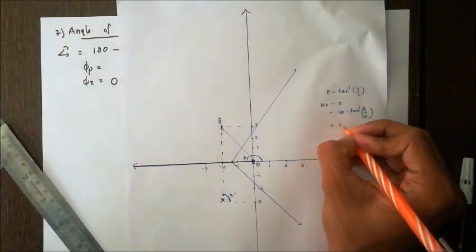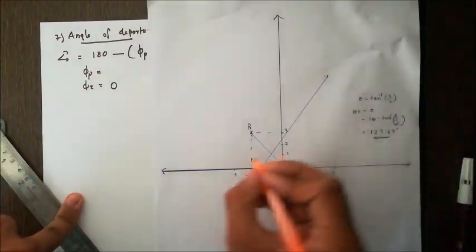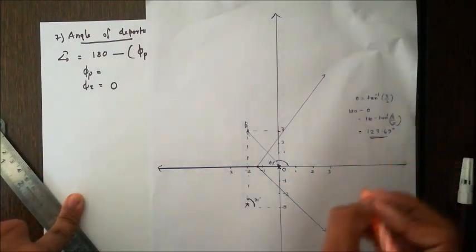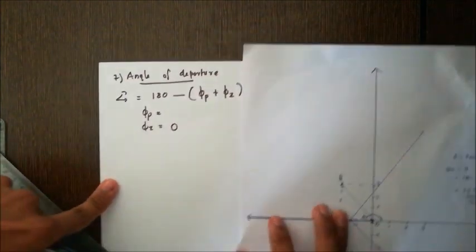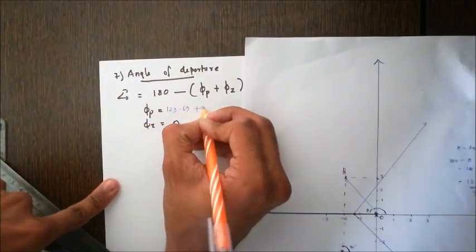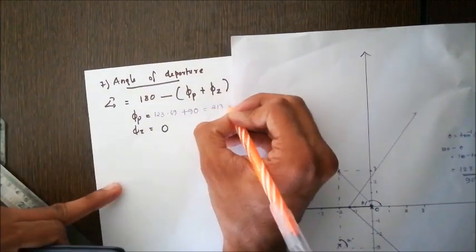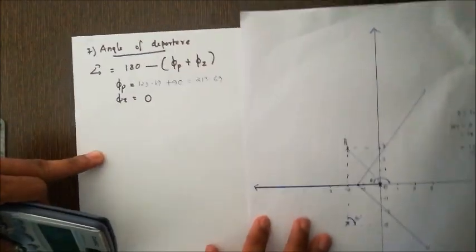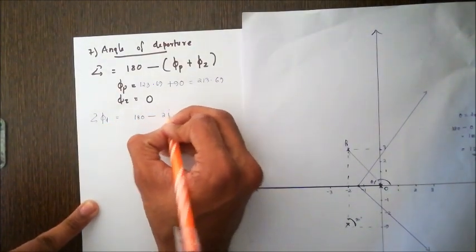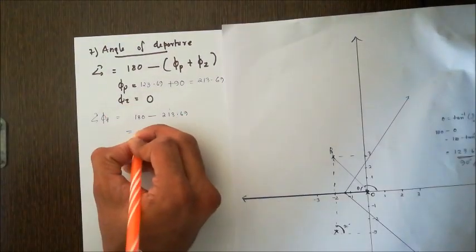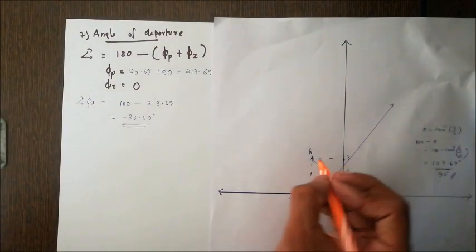The required angle is 180° - tan⁻¹(3/2), which gives 123.69°. So one angle with p1 is 123.69°, and the other angle is 90°. Therefore, Σφp = 123.69° + 90° = 213.69°. The angle of departure is 180° - 213.69° = -33.69°.